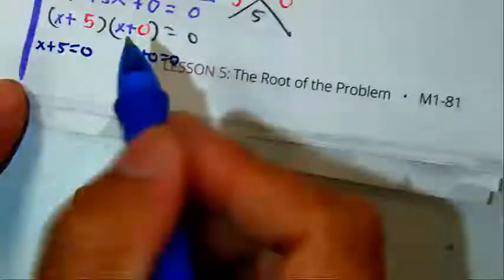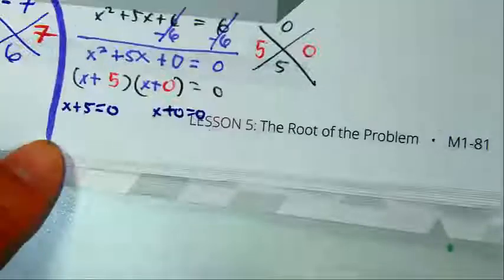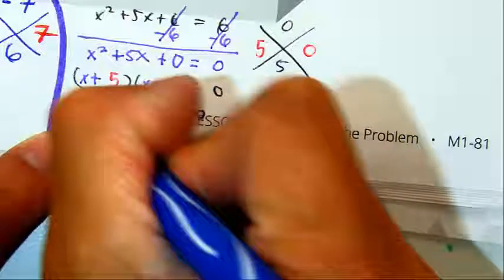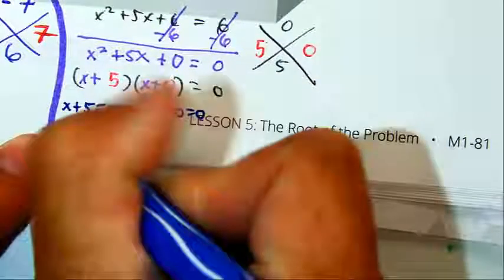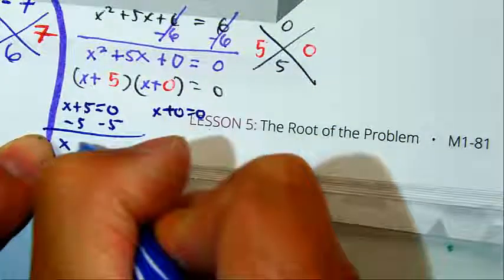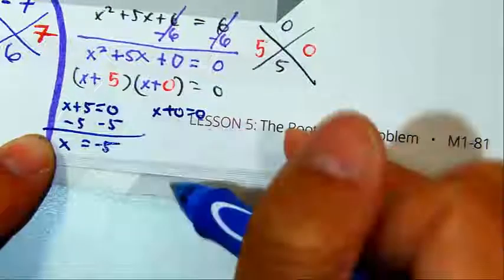What do you do over there? Maybe 5 plus 0. And X is equal to? Oh, X equals negative 5.